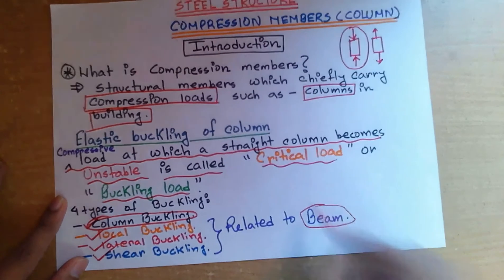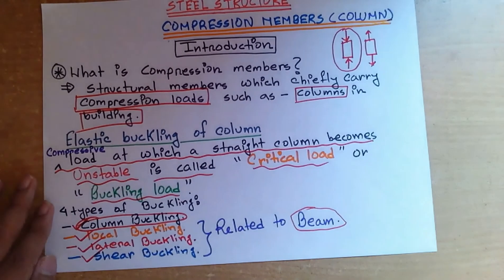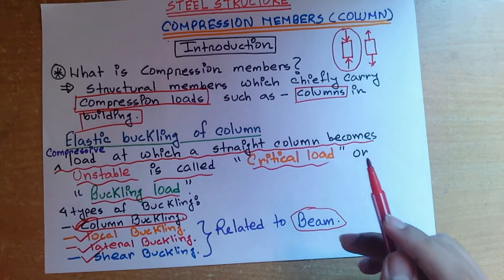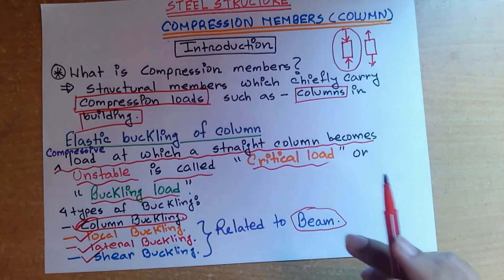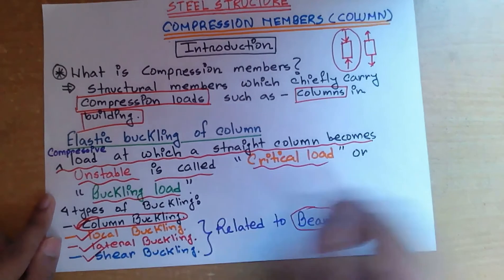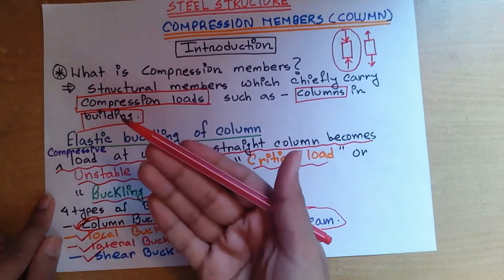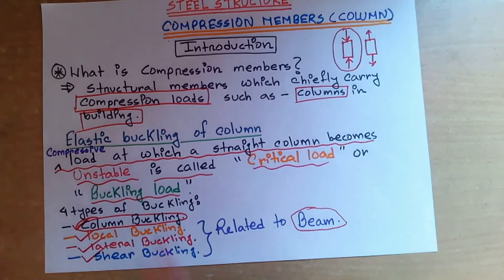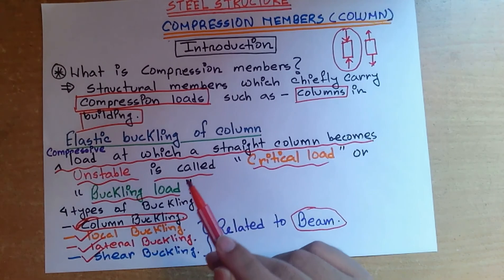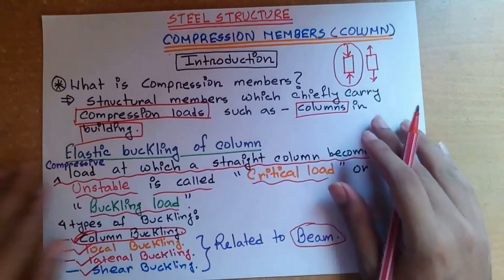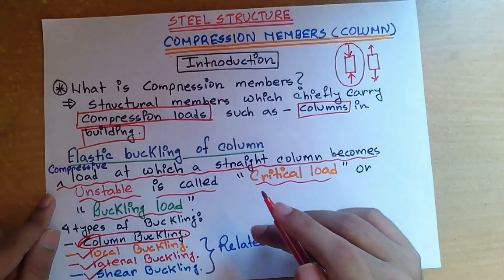The remaining three types — local, lateral, and shear buckling — will be discussed when we cover the chapter on beams. Now, what is column buckling? Column buckling means when the load on a straight column becomes larger than the critical load, then large lateral deflection takes place — that is column buckling. So when the load exceeds the critical load or buckling load, large lateral deflection occurs, and that is called column buckling.